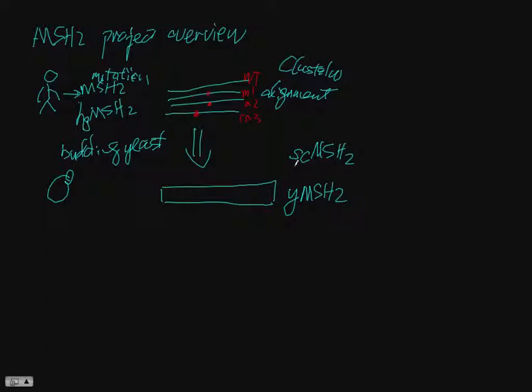But the question is, for those human mutations, I need to figure out where in yeast we put that. So we also need to do an alignment to find out what's called the cognate site - basically a conserved site between species.